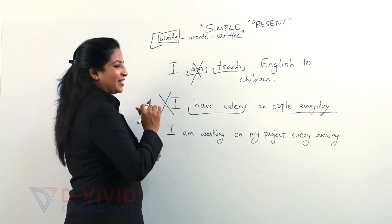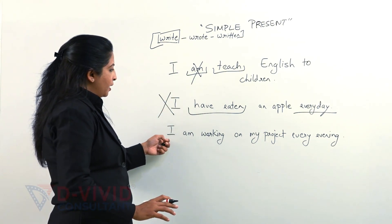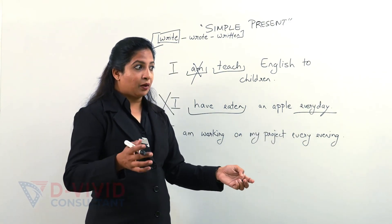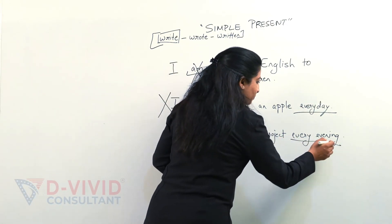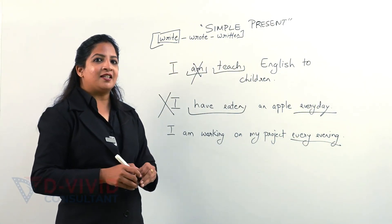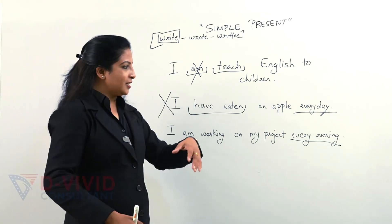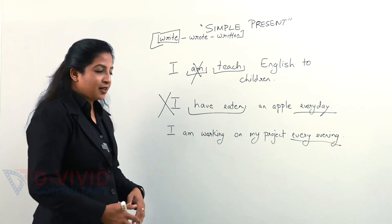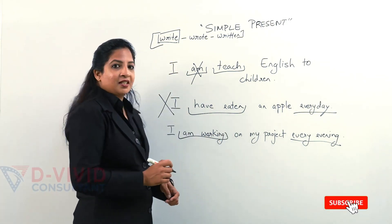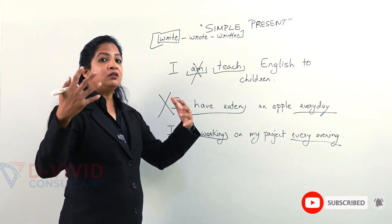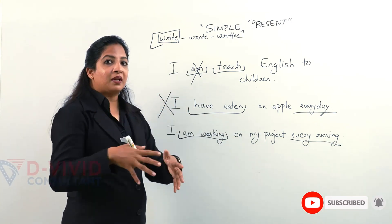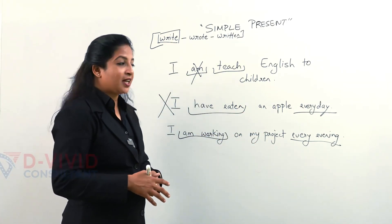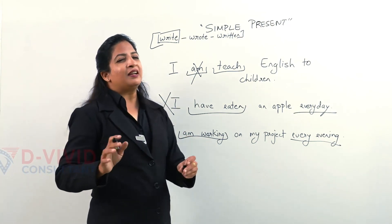What about this? I am working on my project every evening. Again, every evening. It shows that the action is supporting simple present nature. It is everyday, it's a routine. And the tense that I've picked is present continuous. So a wrong combination, a wrong blend has been created. A miscommunication has been created. And so I get zero for this.